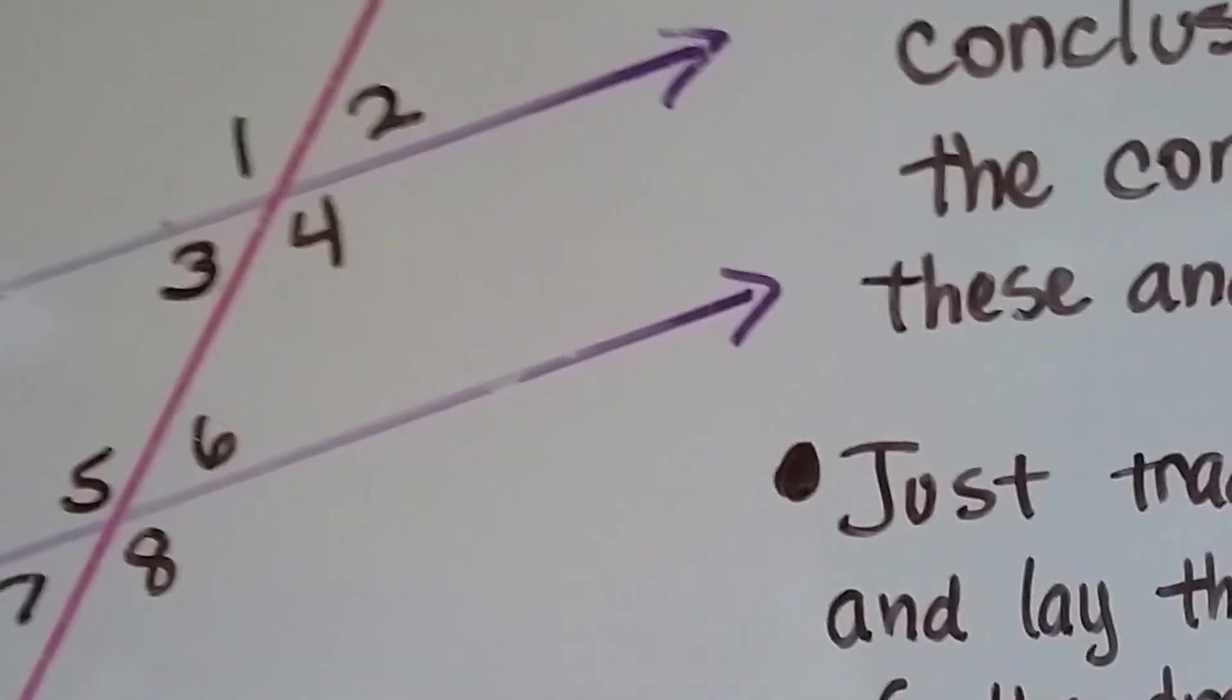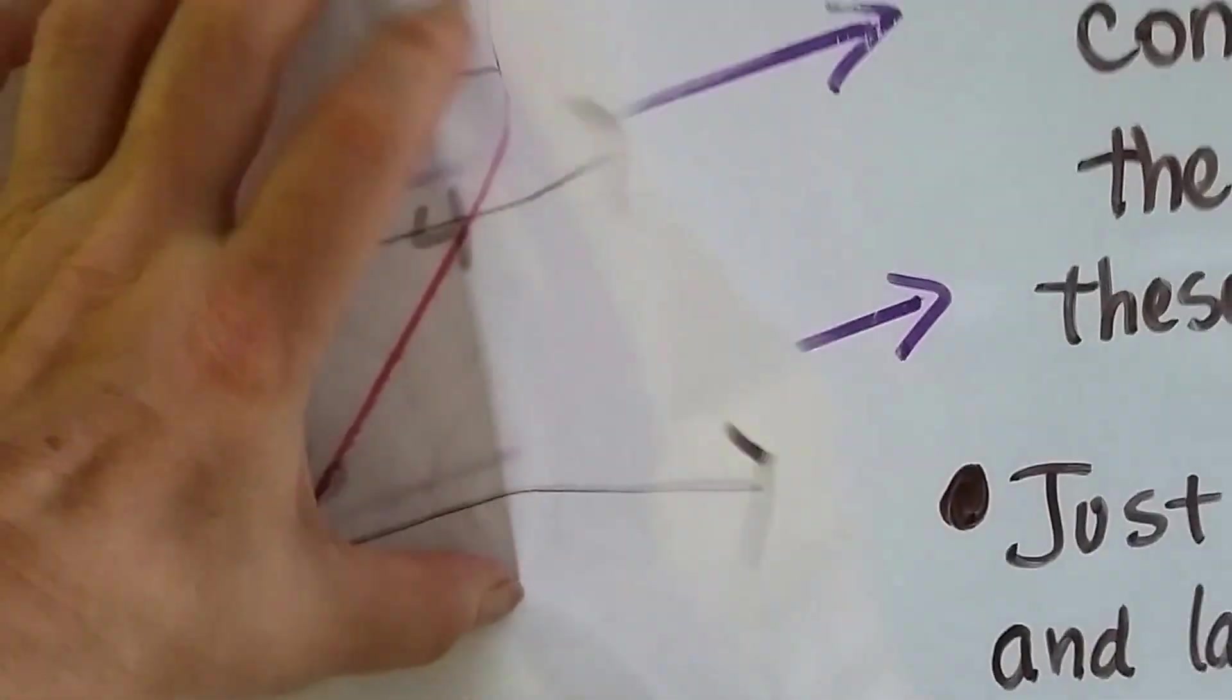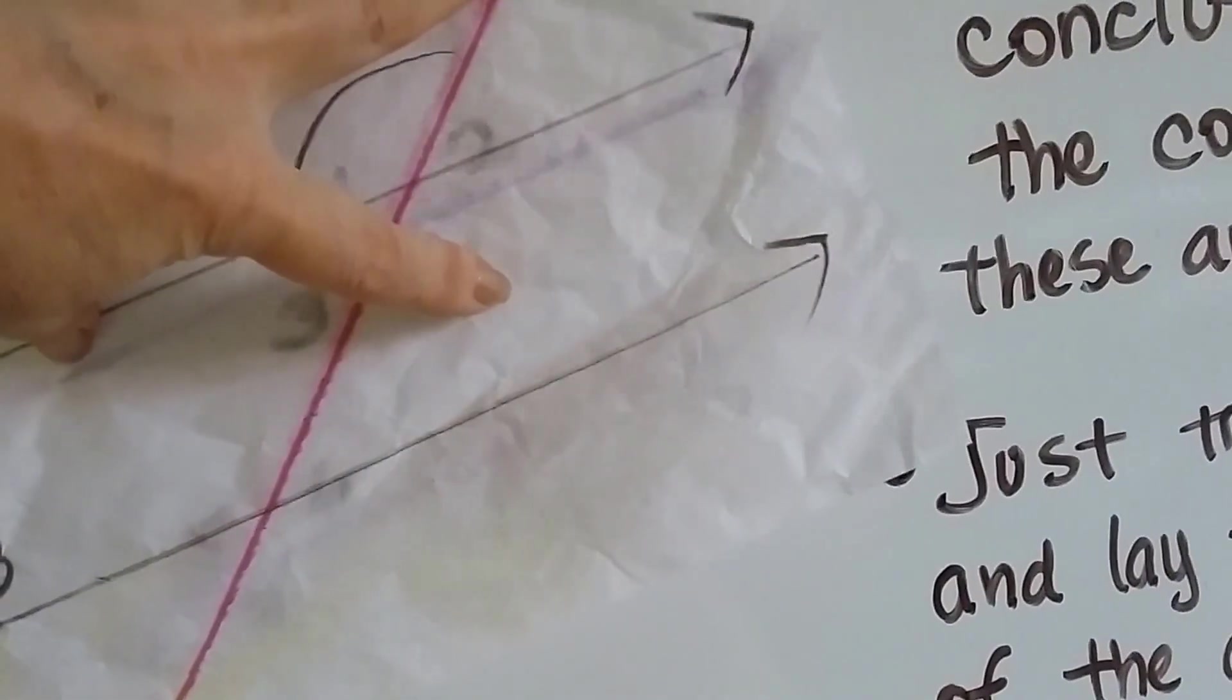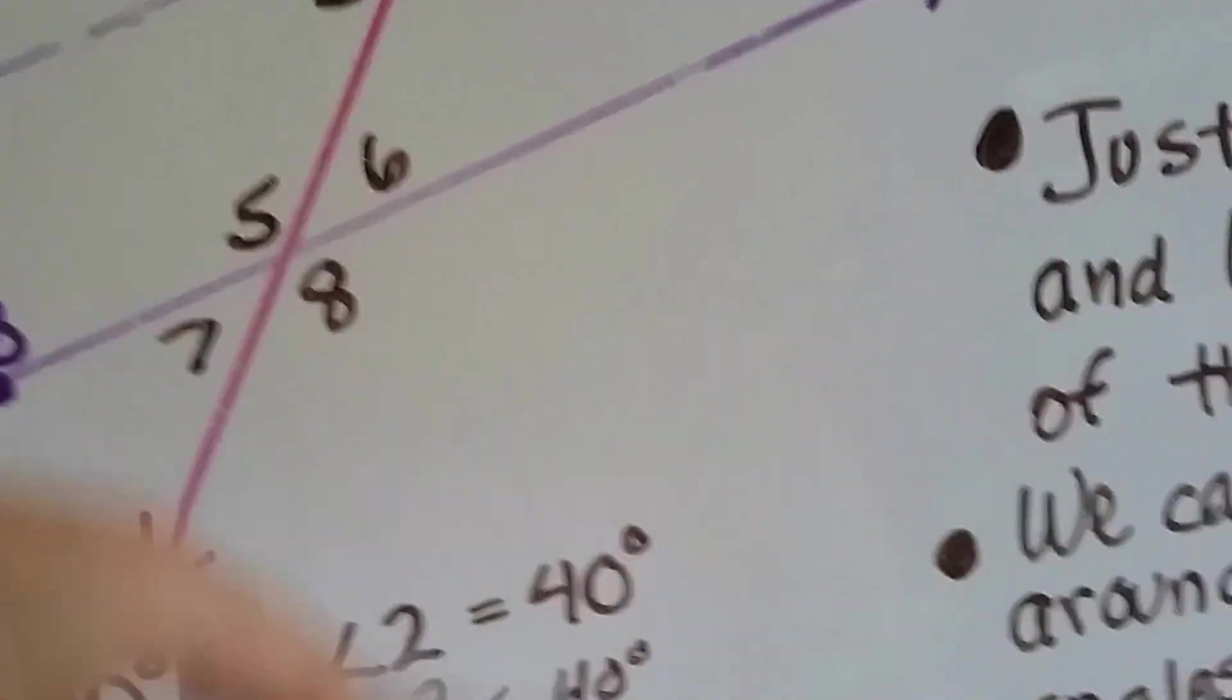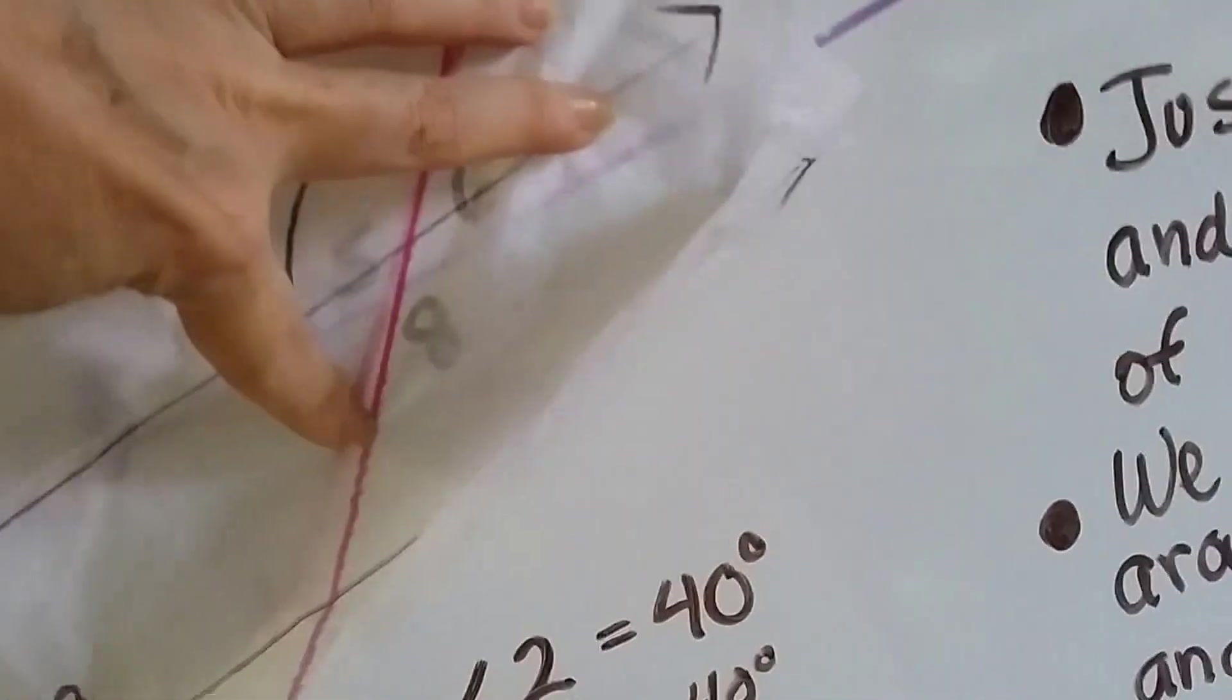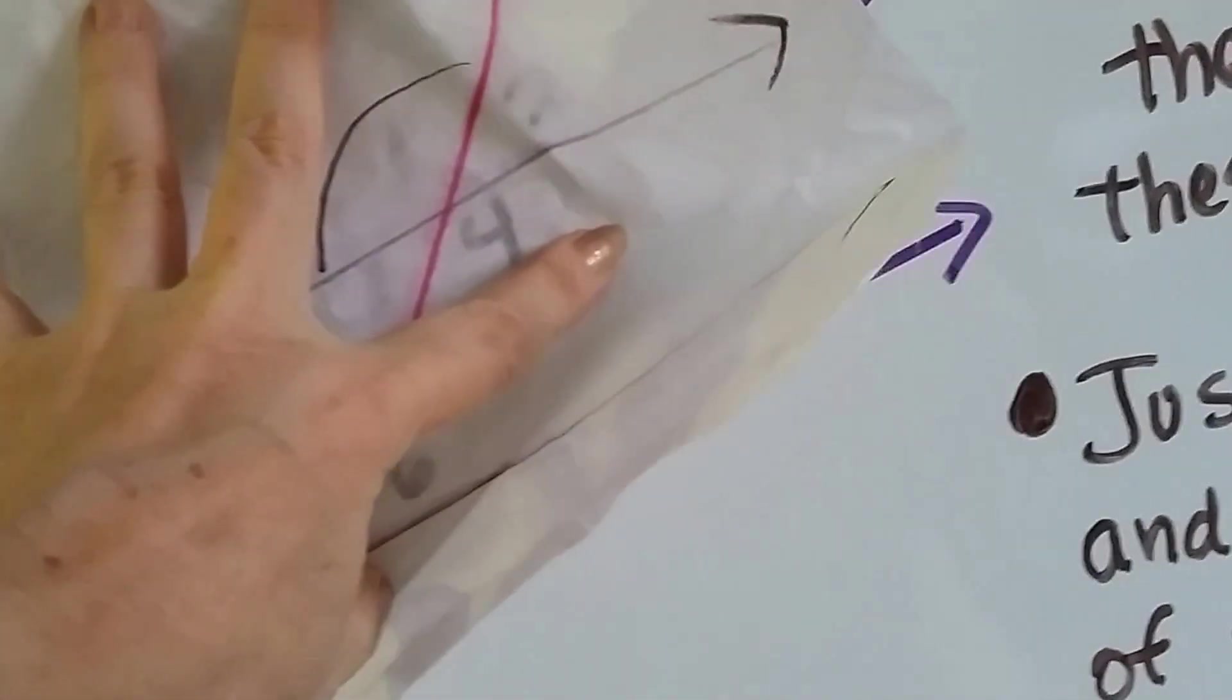And we can draw the exact same thing on here. What we can do is lay our tissue paper over our drawing like this, and we can line up the measures. So we can see angle 1 and angle 2 there. Now, I put this curve here on angle 1 so we can watch what happens when we move this down to angle 5. I've got my fan on, so it's kind of blowing it around. But can you see how angle 5 lines up perfectly where angle 1 was and angle 6 is the same as angle 2?